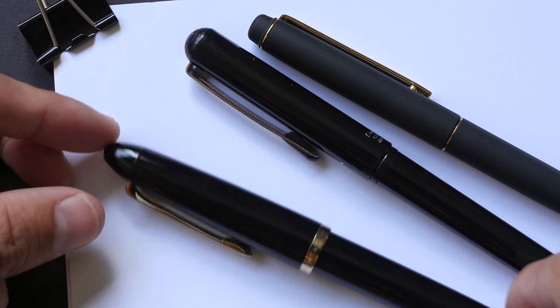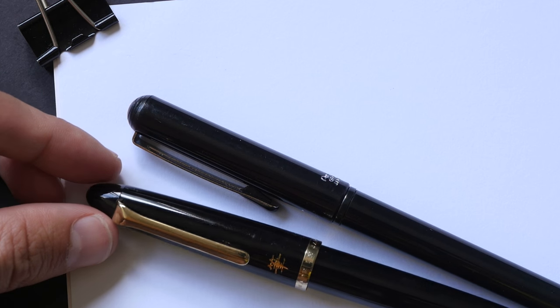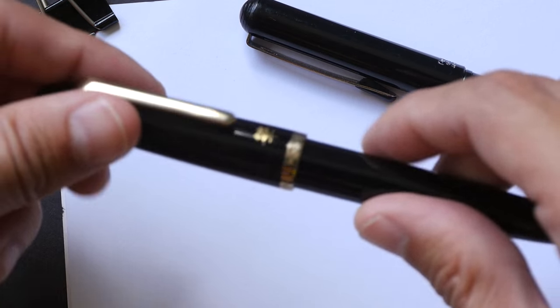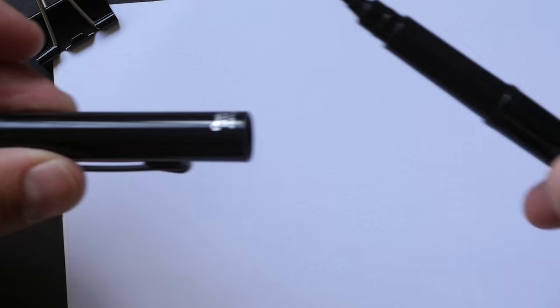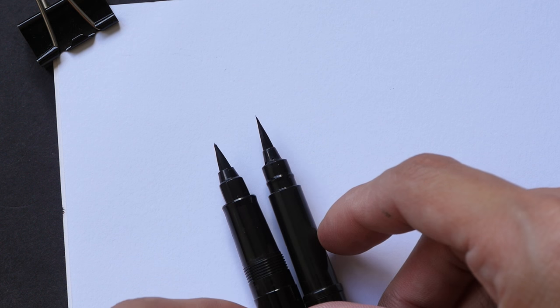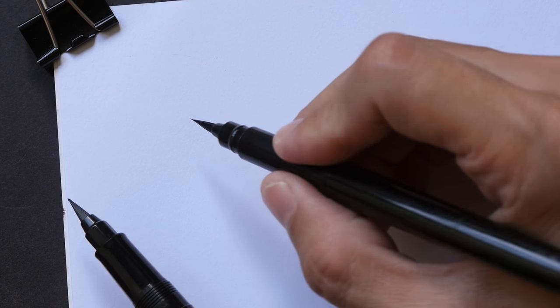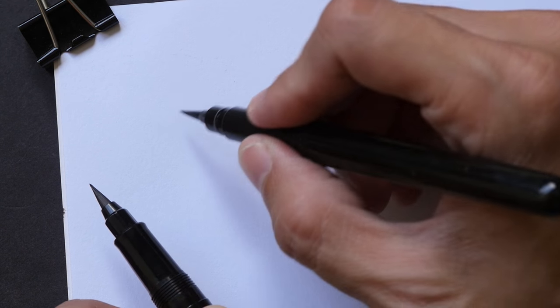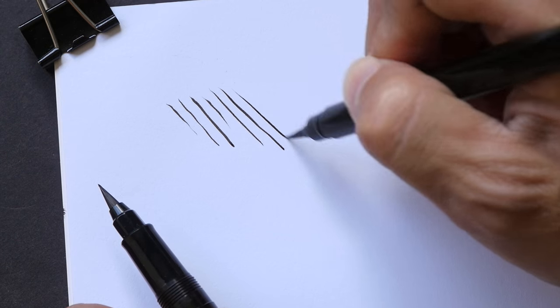So let's compare the Sailor brush pen with the Pentel brush pen and the Kuretake brush pen. The Sailor and the Pentel both use synthetic bristles. Let me remove this. So the Pentel brush pen is actually a pull-off type of cap, while the Sailor is a twist cap. Let's take a look at the hair. The Pentel has longer hairs, and because that is longer, I find that it's easier to create thinner lines, definitely much easier compared to the Sailor brush pen.